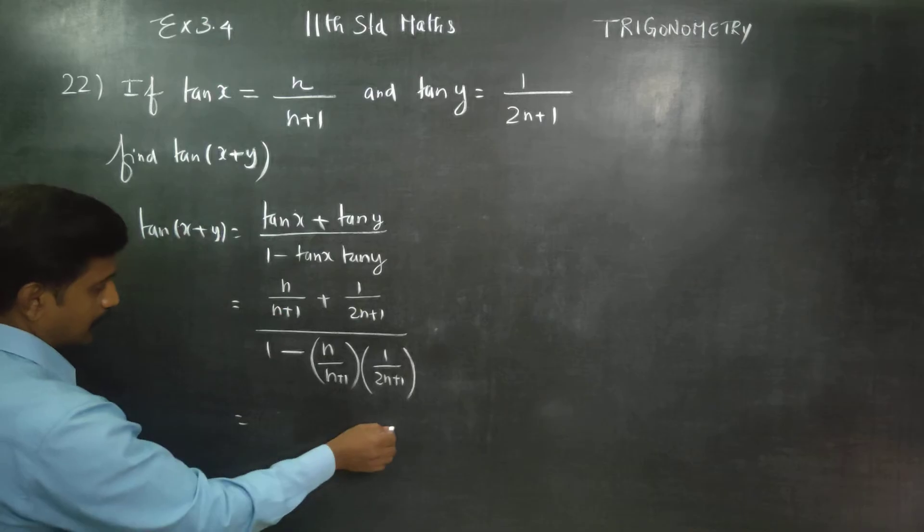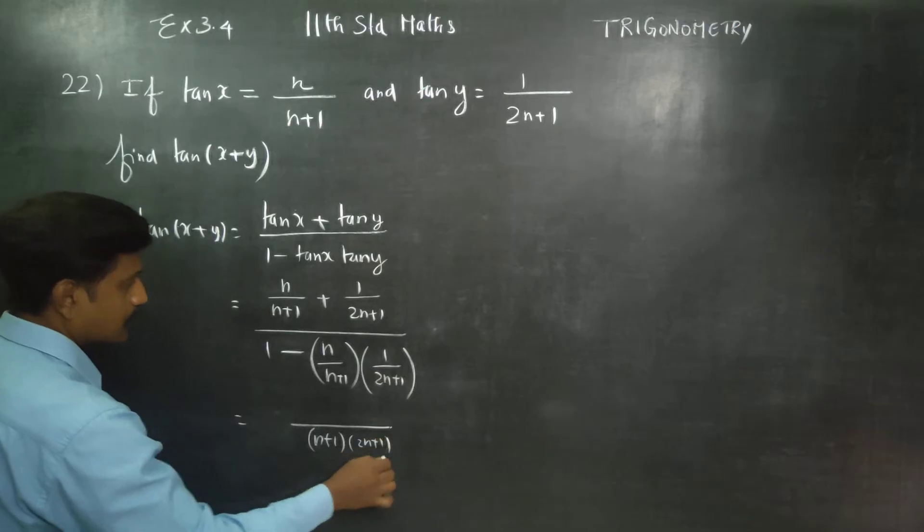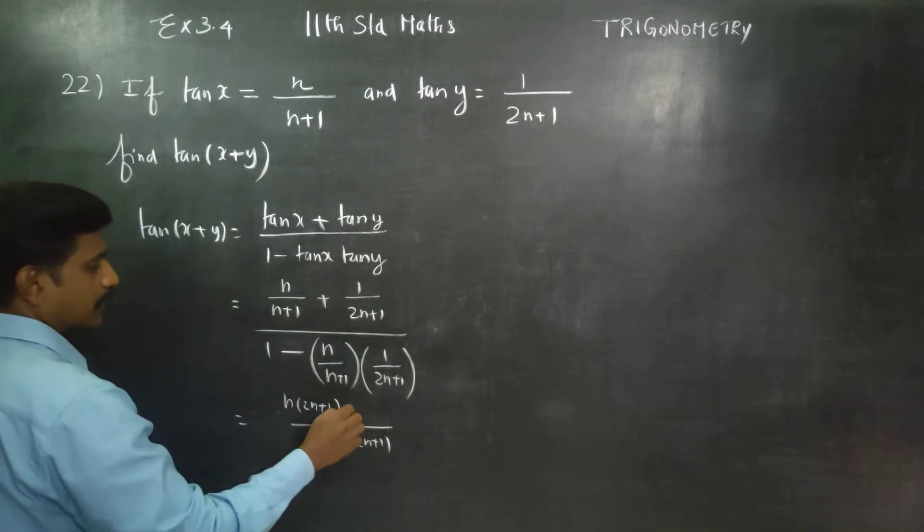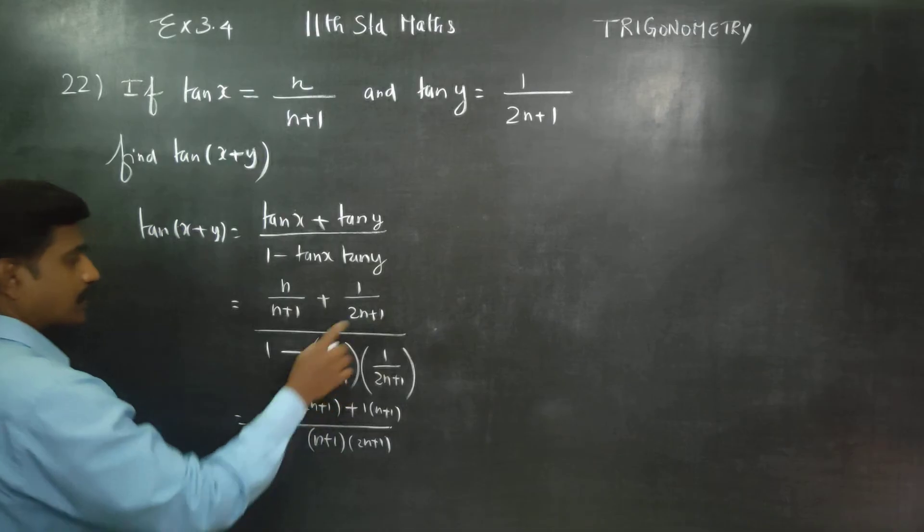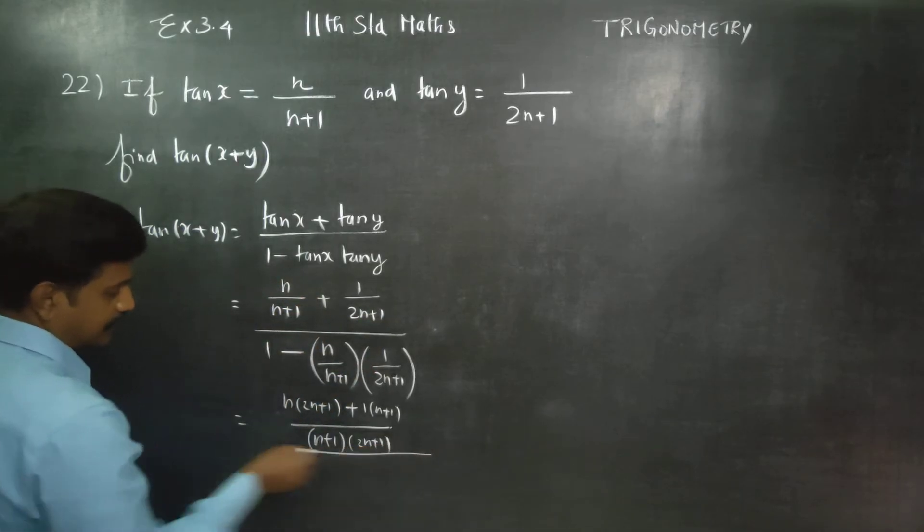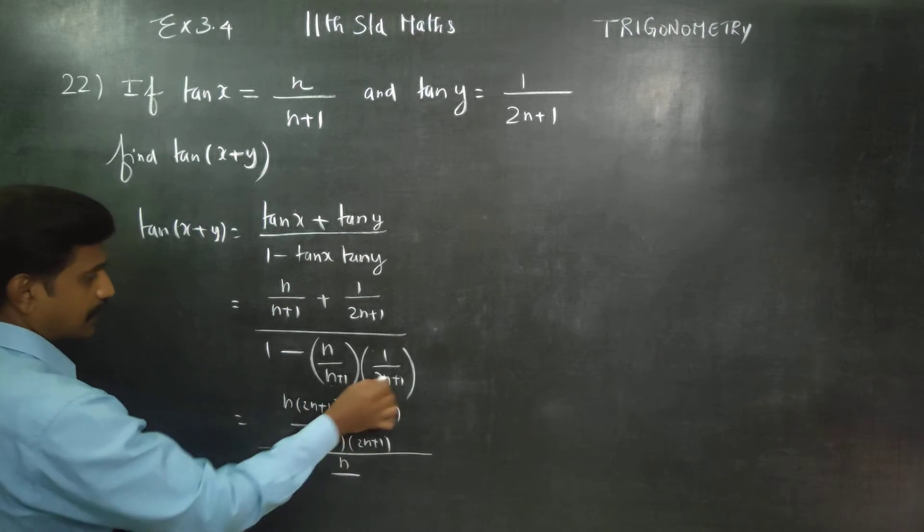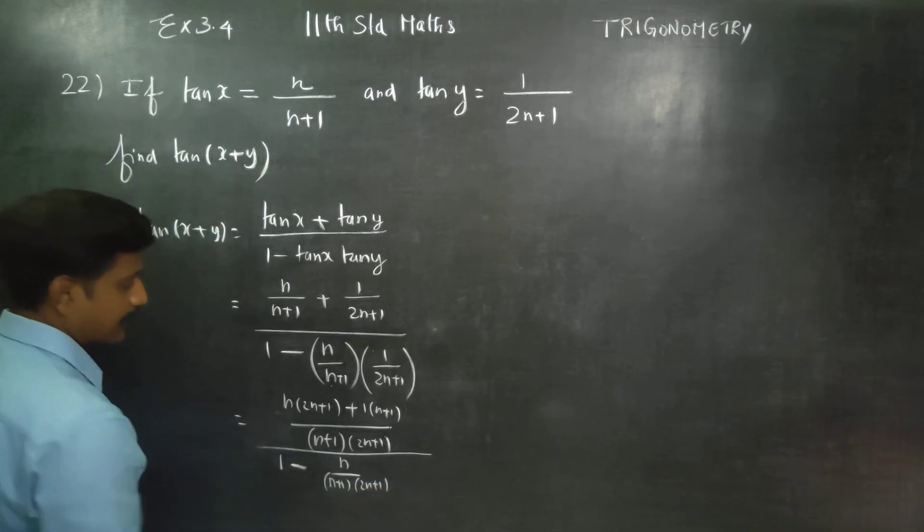You have to take LCM. LCM is (n+1) and (2n+1). Cross multiply: n into (2n+1) plus 1 into (n+1). Below, LCM is (n+1) minus n into 1 is n divided by n/(n+1) into (2n+1).